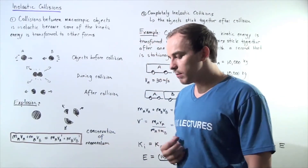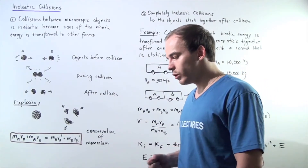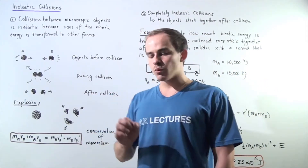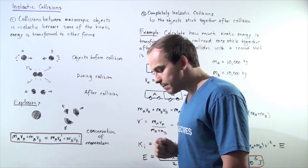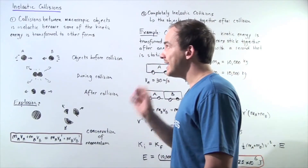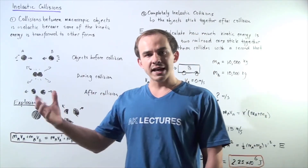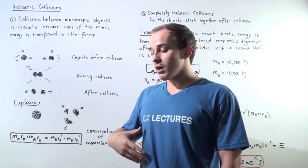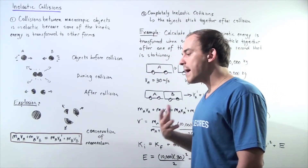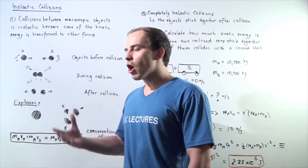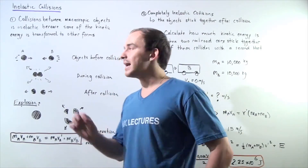In an earlier lecture, we spoke about elastic collisions, and we said that an elastic collision is a collision in which the kinetic energy as well as the momentum of our system of objects is conserved. Now we're going to look at a second type of collision, known as an inelastic collision, in which the kinetic energy is not conserved, because some of that kinetic energy is transformed into other forms of energy. Whenever two or more macroscopic objects collide, those collisions are usually, to some extent, inelastic.